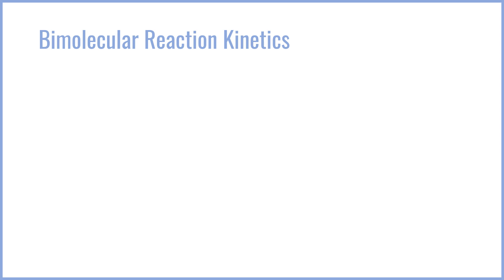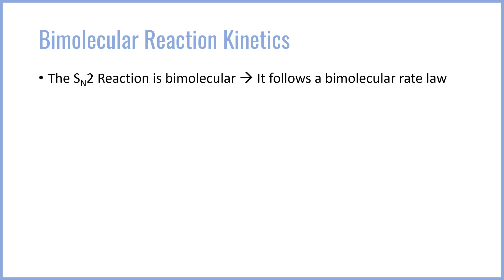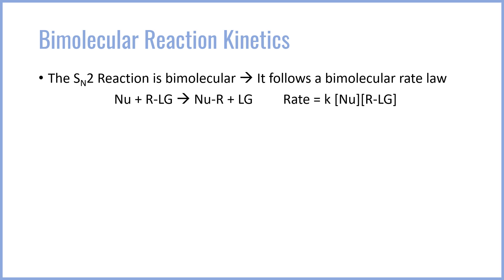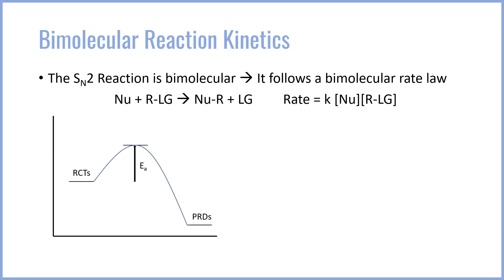A third consideration for the nucleophilic substitution reaction is that it follows bimolecular reaction kinetics. The SN2 is bimolecular, meaning two different molecules must react together for the reaction to happen, and it follows a bimolecular rate law. The nucleophile must collide with the carbon bearing the leaving group, so the rate of the reaction depends on both the concentration of the nucleophile and the concentration of the substrate. Looking at the reaction coordinate, this occurs in one step with only one activation barrier — for the nucleophile to form the associative transition state with the carbon and leaving group.